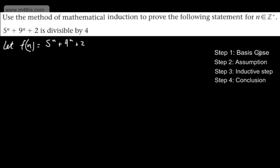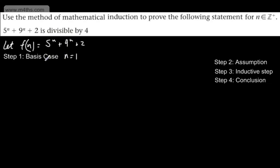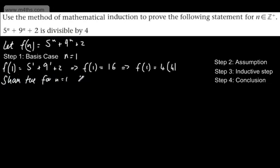We now carry out our basis case. We let n be equal to 1, as a small positive integer value. So f(1) will give me 5 to the power of 1, plus 9 to the power of 1, plus 2. That gives us 5 plus 9, which is 14, plus 2, which is 16. Quite clearly that's divisible by 4 — f(1) equals 4 lots of 4. Shown true for n equals 1, therefore divisible by 4.